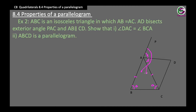We are also told AB is parallel to CD. We need to show that angle DAC equals angle BCA. Since PAC is an exterior angle, angle PAC equals angle B plus angle BCA by the exterior angle property.